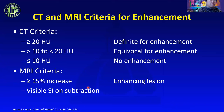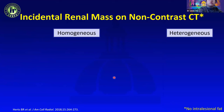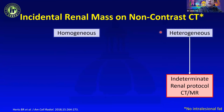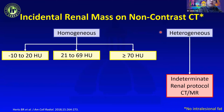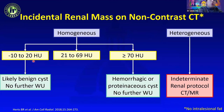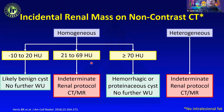I'll review the rules for incidental renal masses because repetition helps us remember. If we see a renal mass on non-contrast CT without any fat, we first look at whether the lesion is homogeneous or heterogeneous — a heterogeneous lesion is indeterminate and should be worked up with renal protocol CT or MRI. With a homogeneous lesion: less than 20 HU is a benign cyst requiring no workup; 70 HU or more is a proteinaceous or hemorrhagic cyst also requiring no workup; intermediate HU lesions require renal protocol CT or MRI.